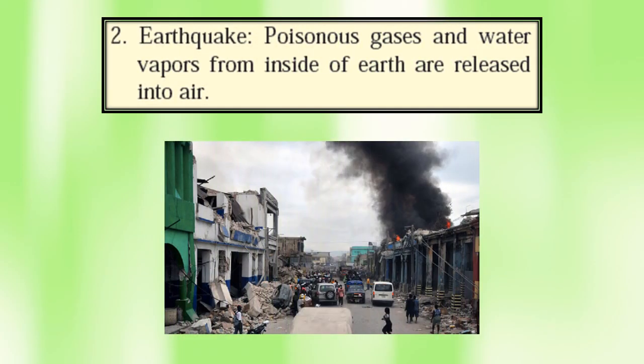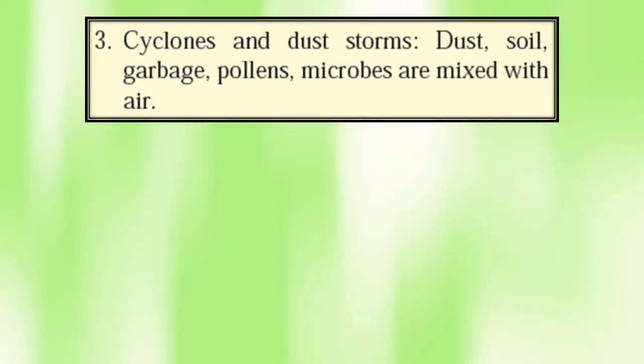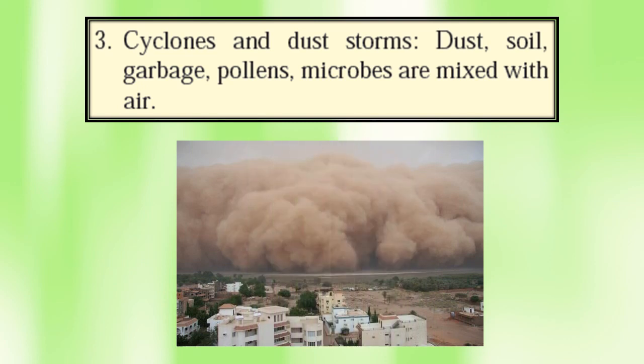Number two, earthquake. Poisonous gases and water vapors from inside the earth are released into the air, as seen in the picture. Number three, cyclones and dust storms. Dust, soil, garbage, pollens, and microbes are mixed with air.